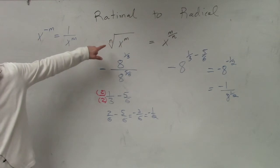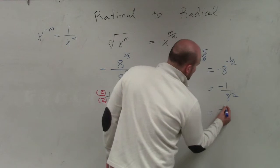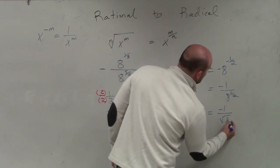Then, to rewrite that as a radical expression, that's now going to be the square root. So it's negative 1 over the square root of 8.